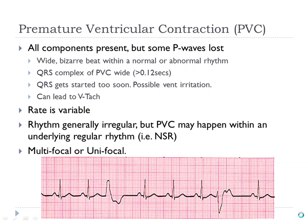These would be multifocal PVCs because they look different — two different types are present. Multifocal PVCs are worse because more than one area of the heart is irritated. As nurses, we assess one lead at a time. A PVC is premature ventricular contraction — the ventricle jumps in too fast.